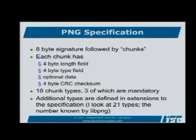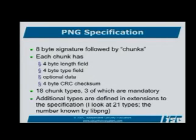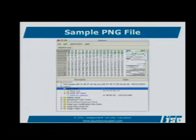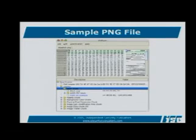The original PNG RFC specifies 18 chunk types, three of which have to show up in every file. There are other extensions that talk about other types, and you can make up your own. I ended up looking at 21 because that's what libpng knows about. I have a little program that can analyze files and break them apart by their specification, and you can see the different chunk types that show up in a particular PNG — that's the only hex you'll see in this presentation.